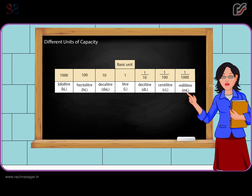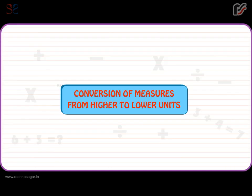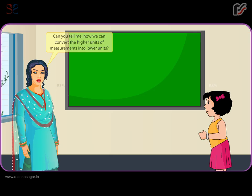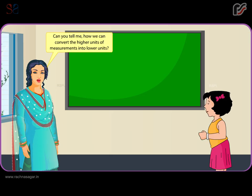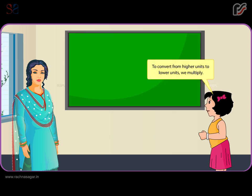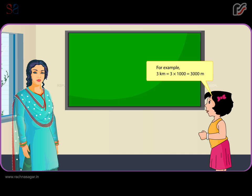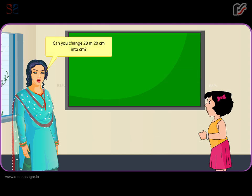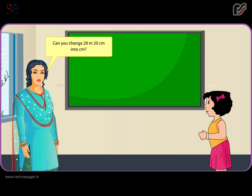Conversion of measures from higher to lower units. To convert from higher units to lower units, we multiply. For example, 3 kilometers is equal to 3 × 1000 = 3,000 meters. Can you change 28 meters 20 centimeters into centimeters?